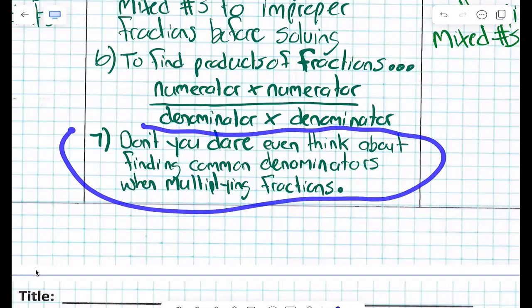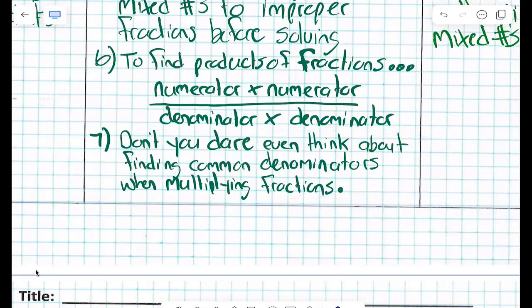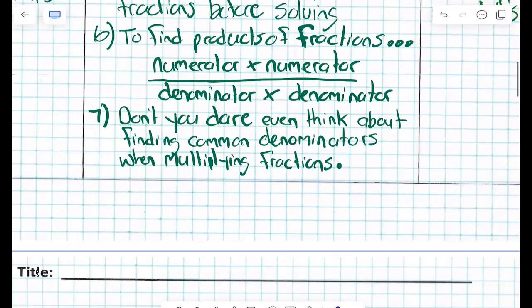On the count of three, we're going to read number seven together. Everyone stay together. One, two, three. Don't you dare even think about finding common denominators when multiplying fractions. That was beautiful. Good job, guys.